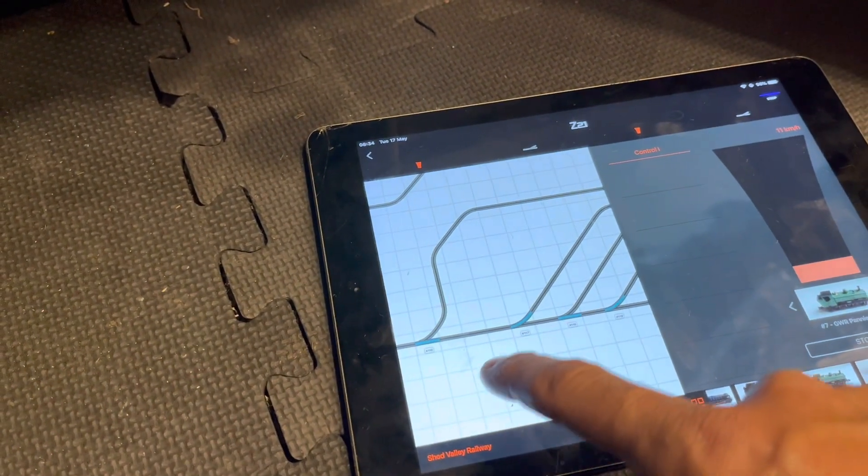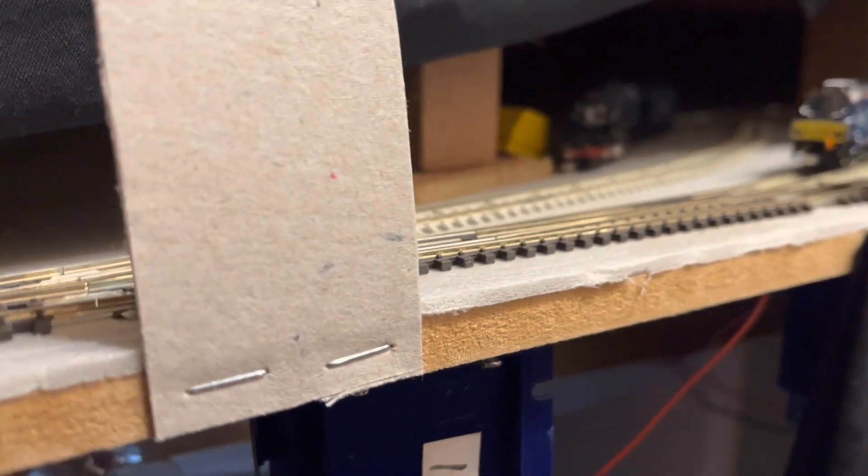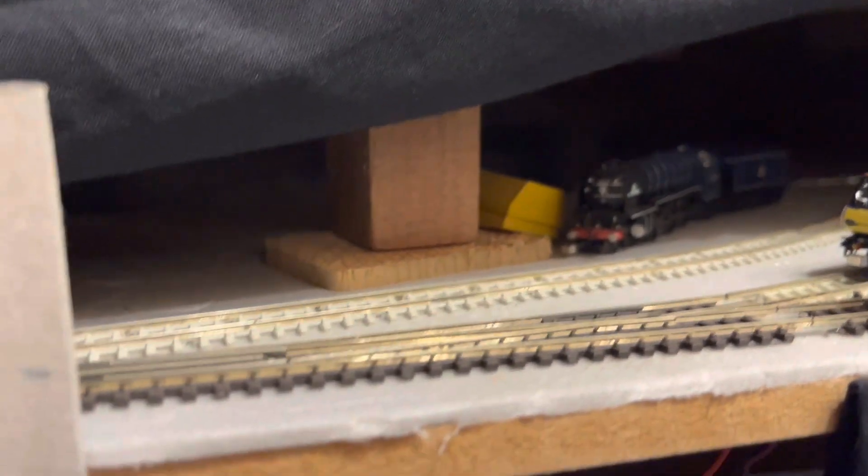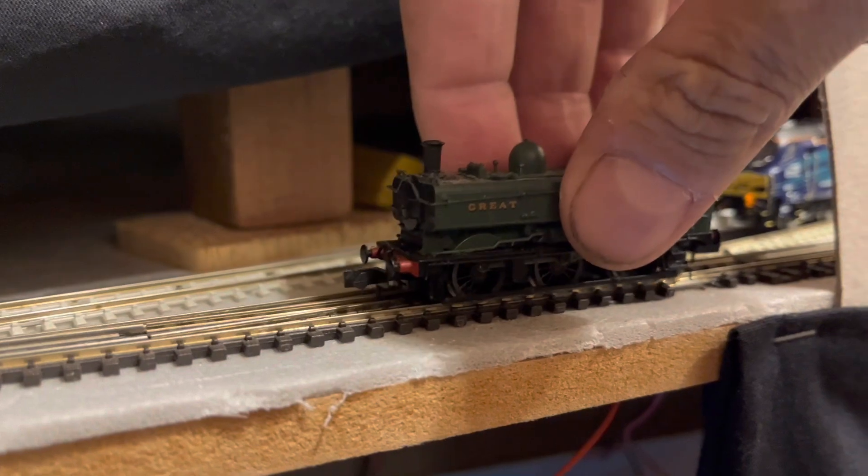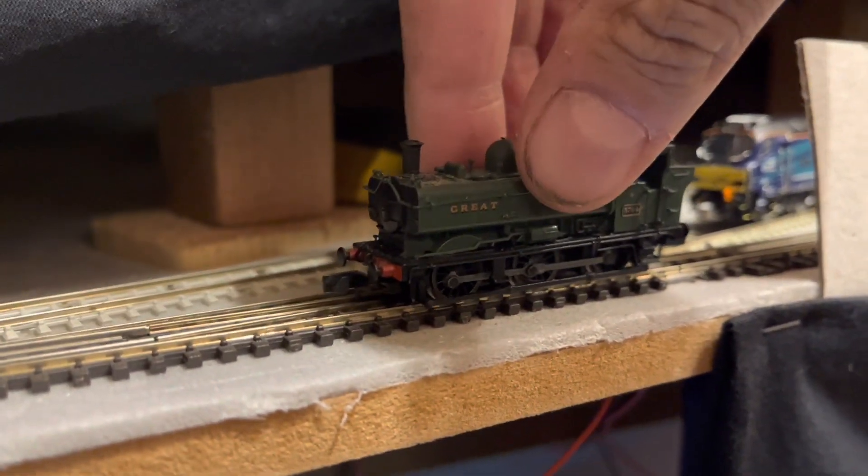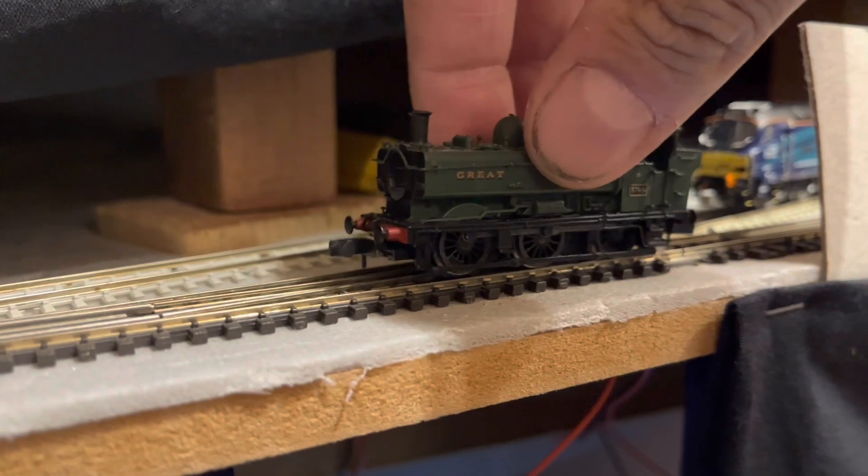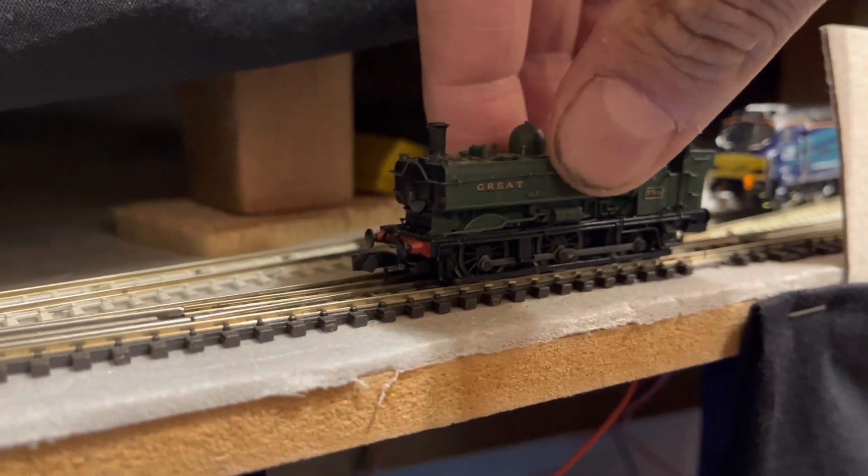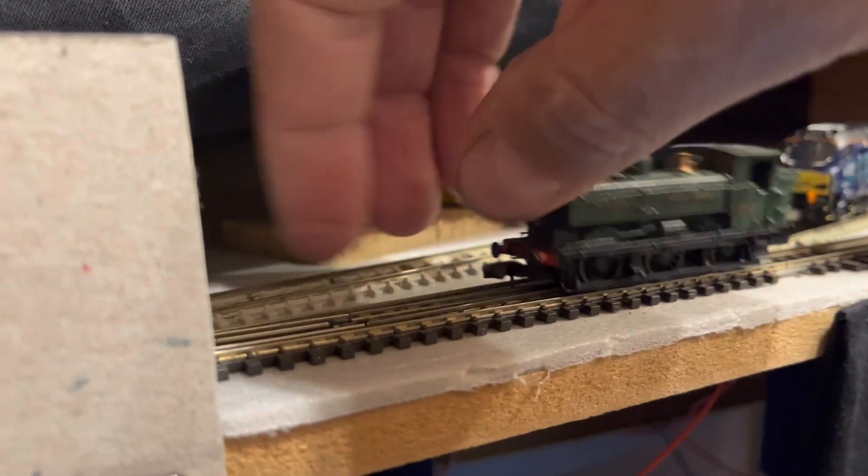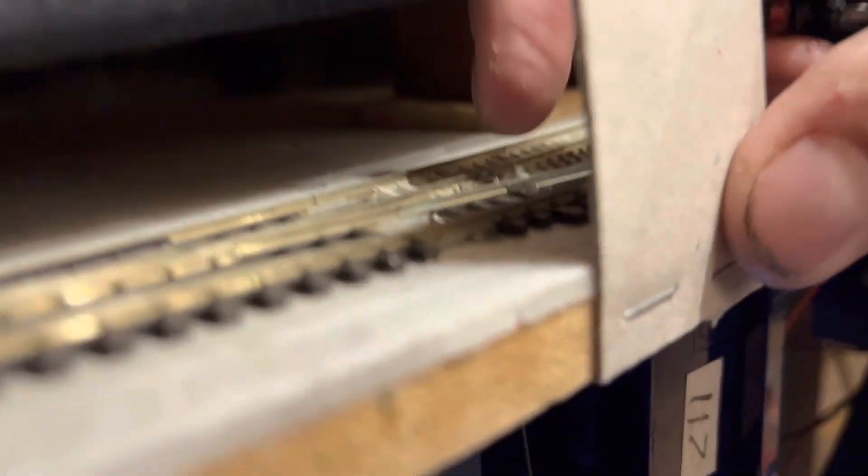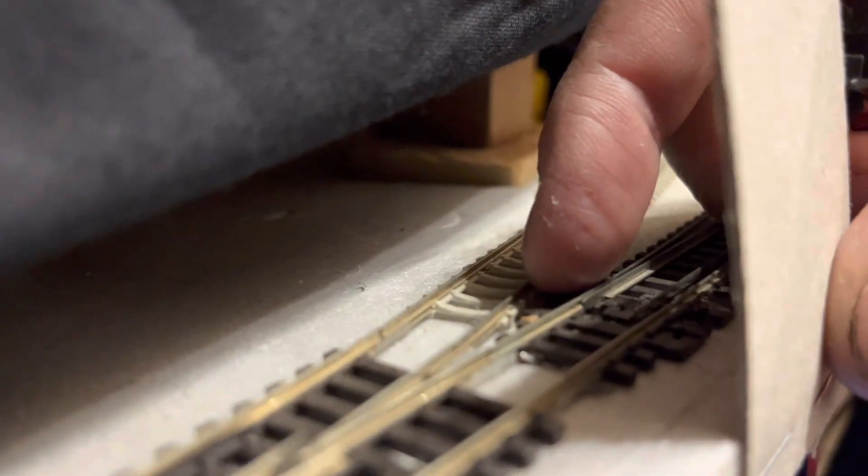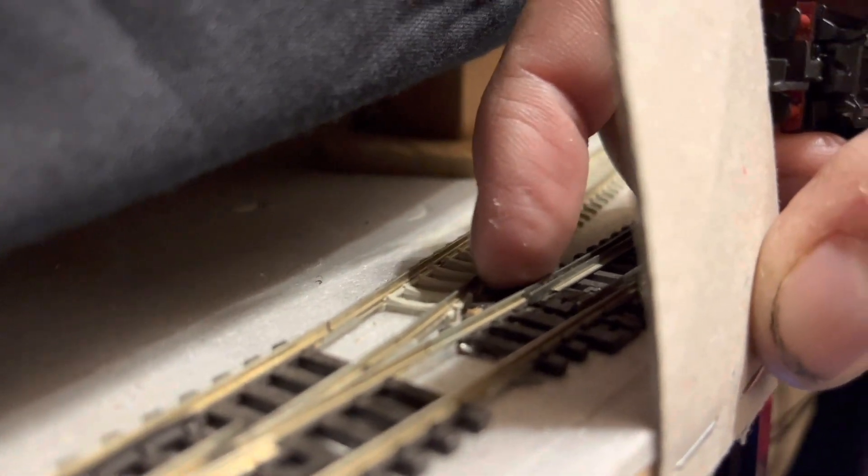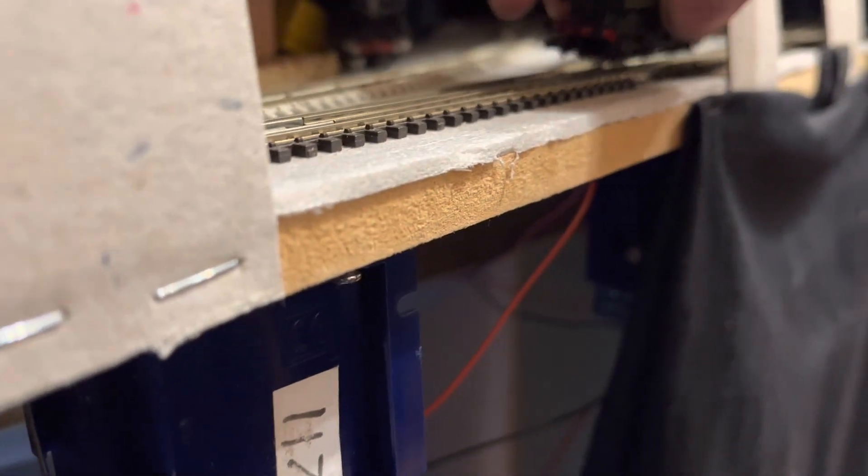So it still works. Important thing to check is obviously we've messed with the frog wiring so if we put a small loco on the frog that would be dead you can see it moves. In fact if I move the point slightly so that the point blade is not contacting we can prove that the frog is live. There we go definitely alive.